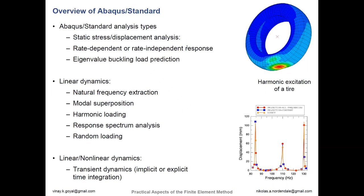Abaqus has a set of analysis types: static analysis, rate-dependent analysis, buckling load predictions, natural frequency extraction, modal superposition, harmonic loading, response spectrum analysis, random load analysis, and transient dynamic analysis — either implicit or explicit in the time integration domain. In this course we'll be looking at some of these, which will give you a very good idea of the types of methods that exist.